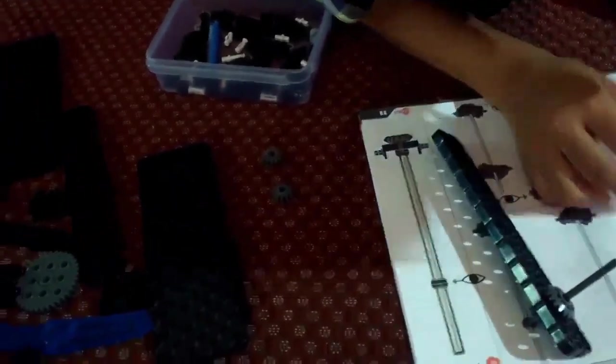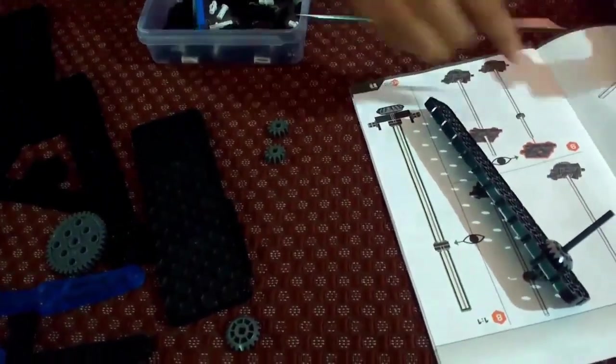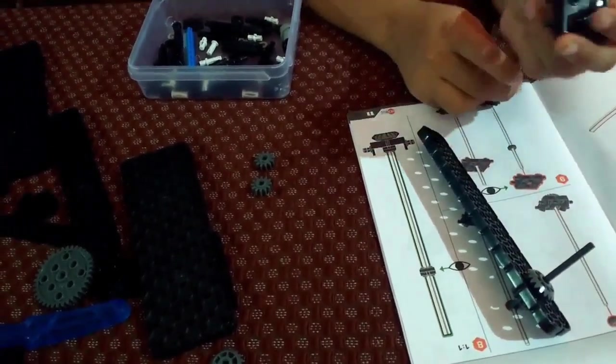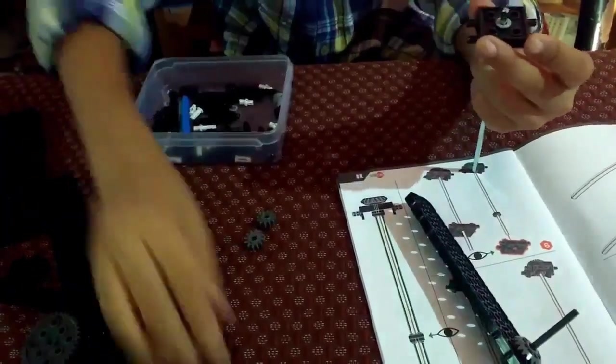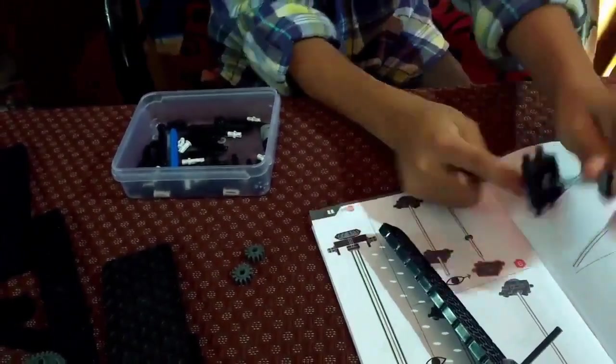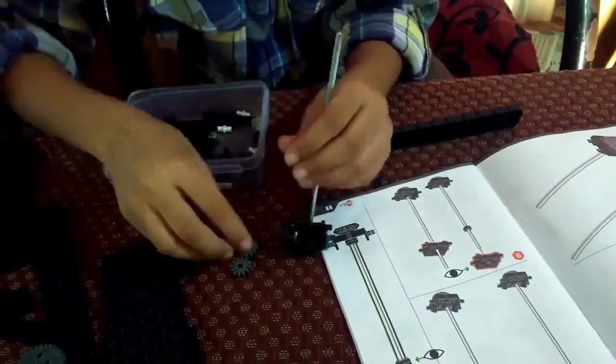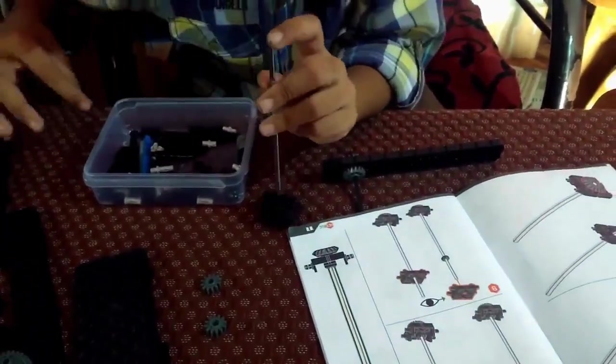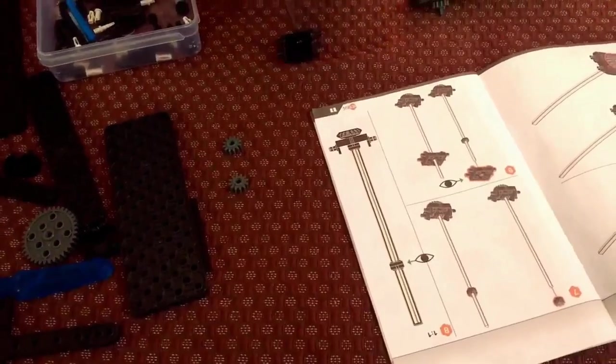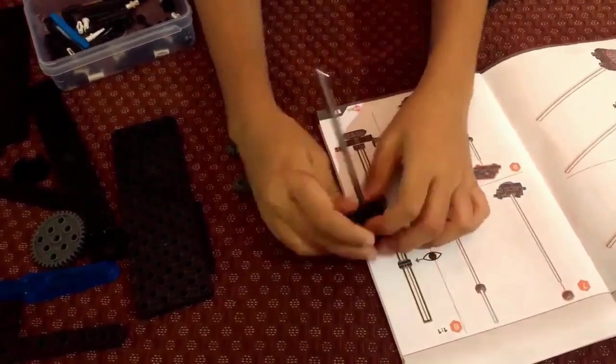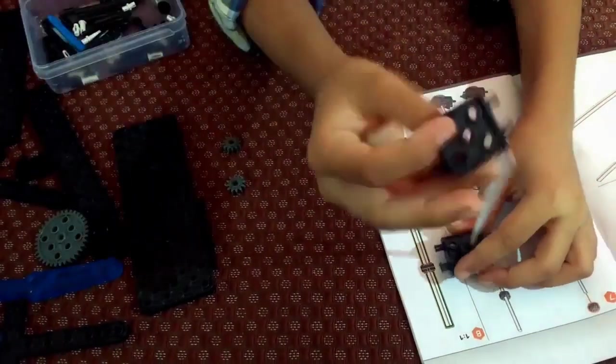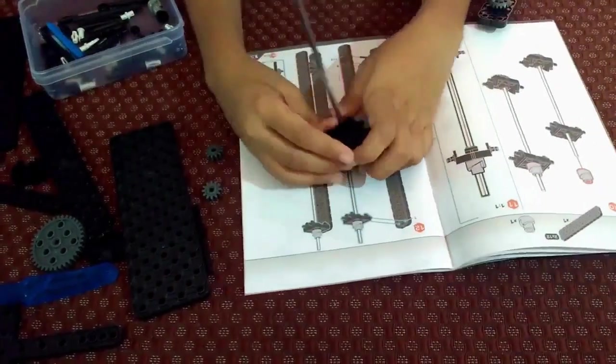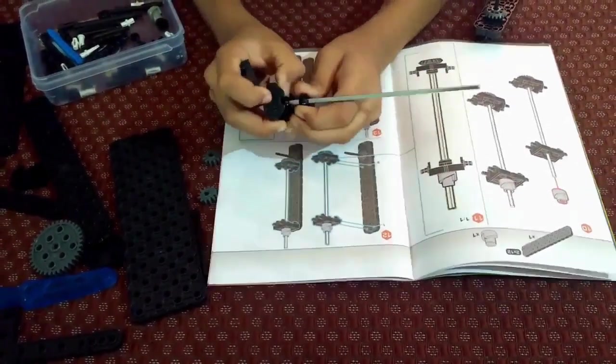So, when we are building this Zip Flyer, it helped me understand how the gears worked. When I put a gear over here and when I spun it, the other gear over there moved according to the mathematics and how the gears work. This helps kids understand the STEM technology, that is, Science, Technology, Engineering, and Mathematics.